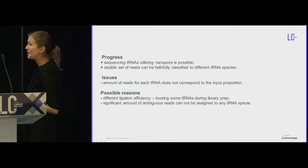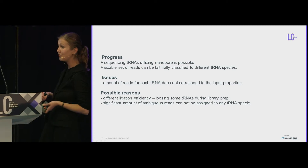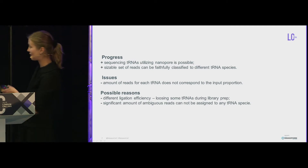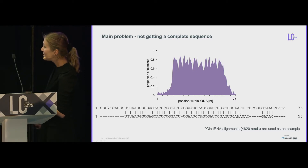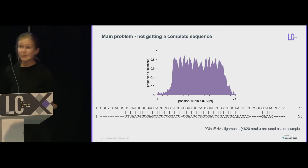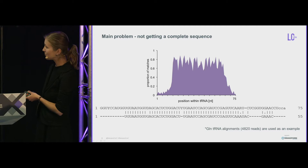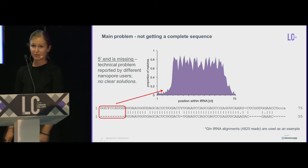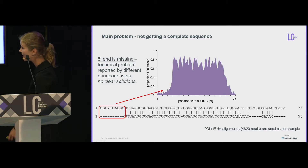Another issue is the huge amount of ambiguous reads because tRNAs are highly similar, and many reads can be assigned to several species. If we have not four but 40 tRNAs, there would be even less probability of distinguishing between that many similar references. The main problem, as we've heard during these talks, is that with nanopore we're not getting the complete sequence at the 5' end — this is a problem of the sequencing itself that we cannot address at this moment.